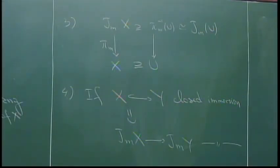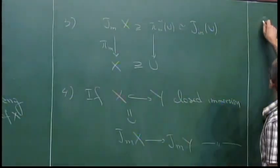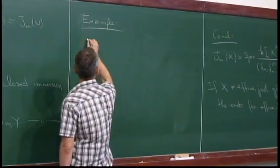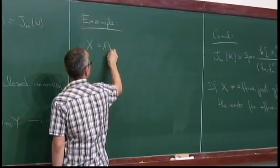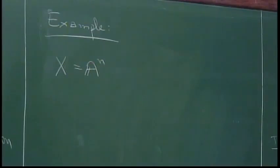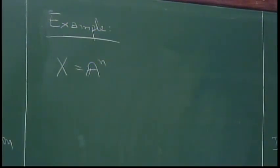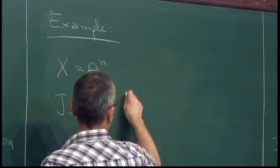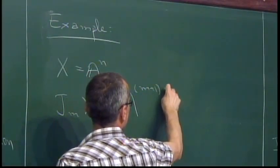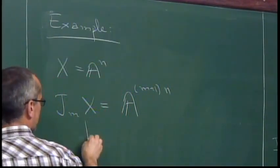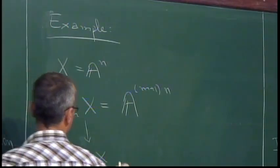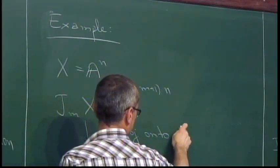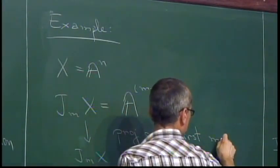The easiest special case is when X is affine n-space. Then X is the spectrum of a polynomial ring, and J_M(X) is simply affine space of dimension (M+1)·N, and the projection map to J_{M-1}(X) is just projection onto the first M·N components.